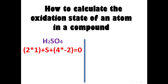We have two hydrogen atoms, so we multiply two hydrogens by the oxidation state of hydrogen, then add it to the sulfur atom, and then add four oxygen atoms multiplied by their oxidation state. The total equals zero. We do some math and then we find the oxidation state of sulfur to be positive six.